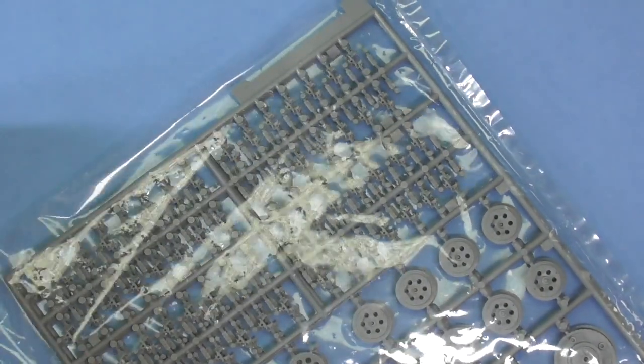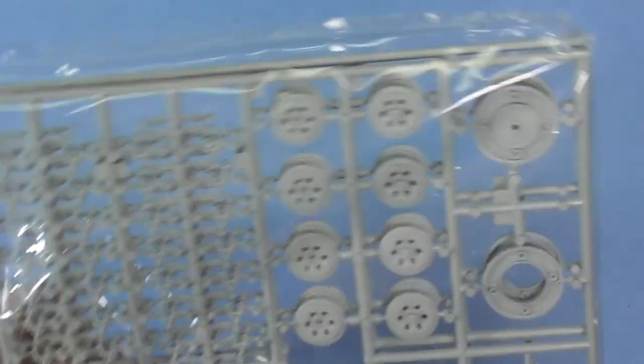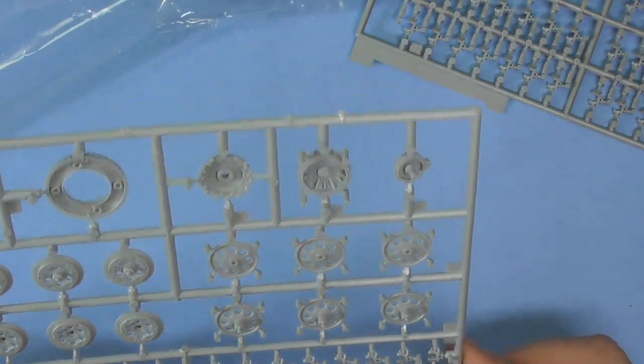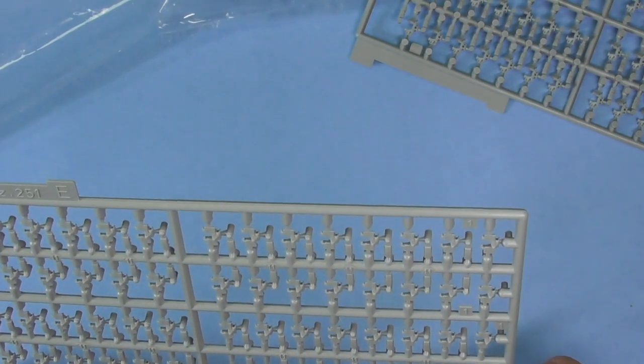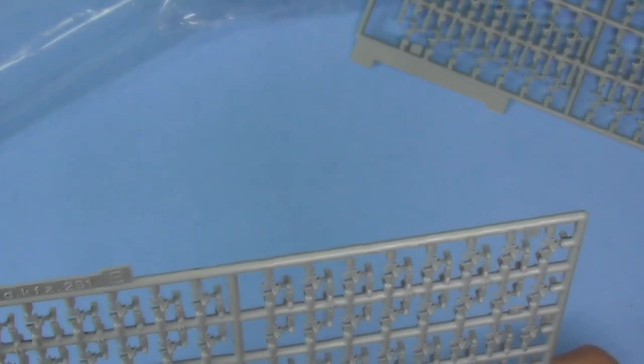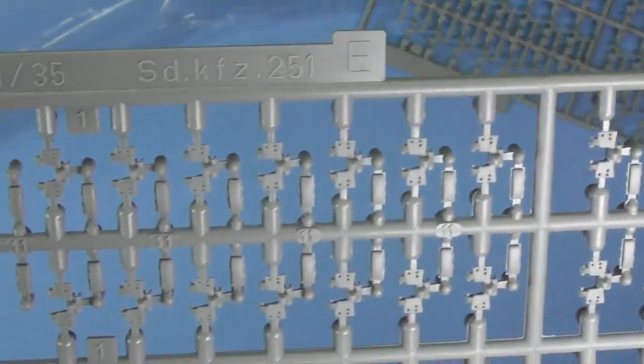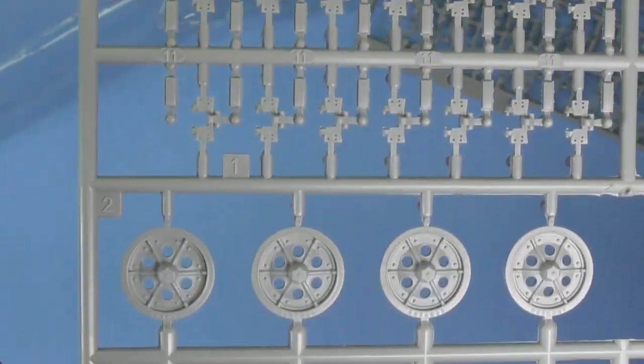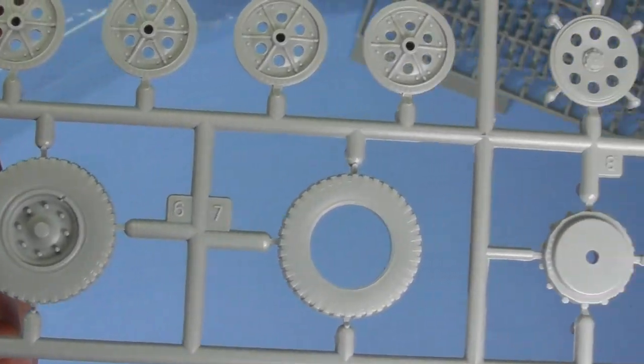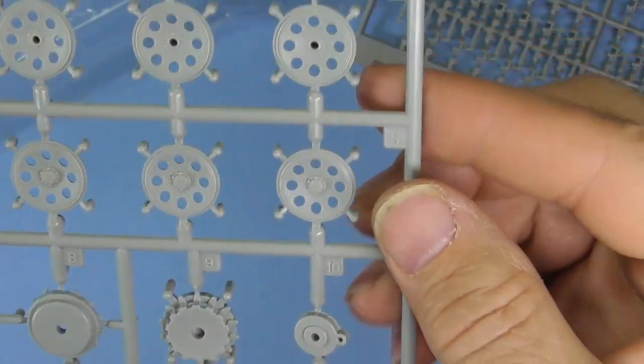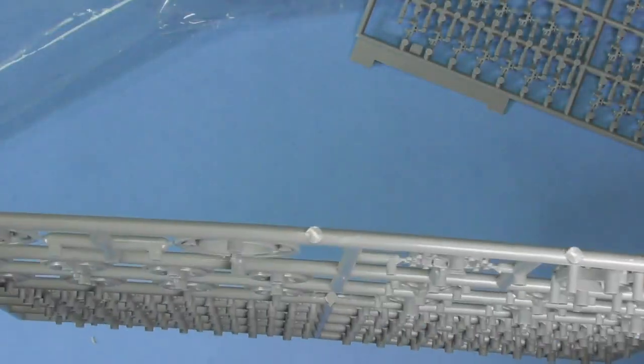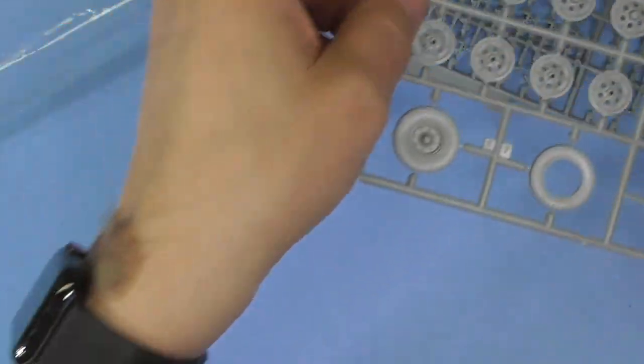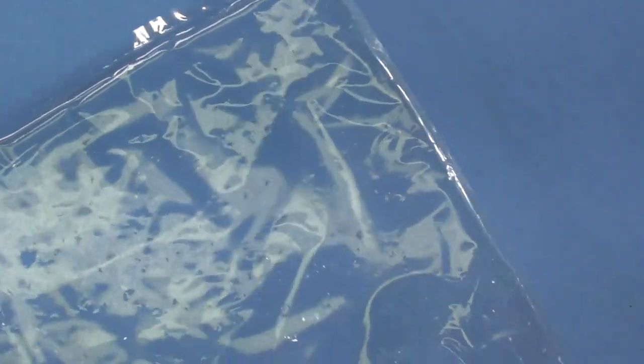And tracks and wheels. Now this comes with the magic tracks. So you won't, you may or may not use these. I guess that's up to you. Matching sprues. Drive wheels. Axle tires for the front. And then tracks. Nice snap together tracks. There's your wheels. Tire. Two piece tires. So two of those. And that's it for the main sprues.